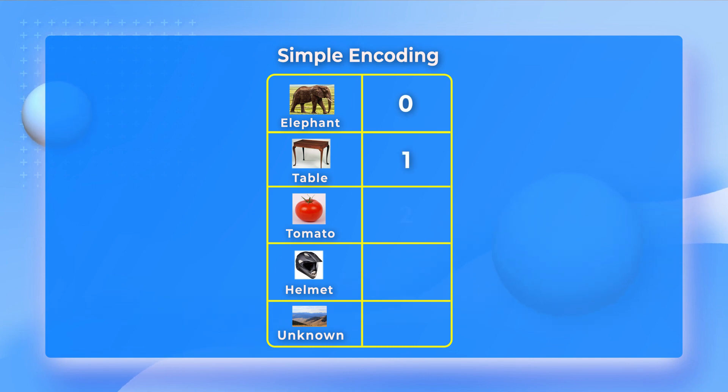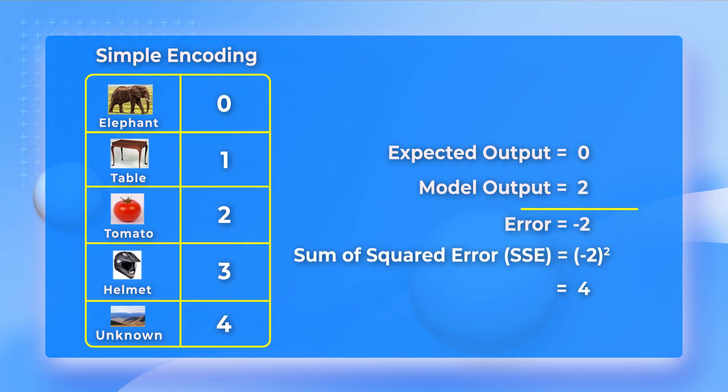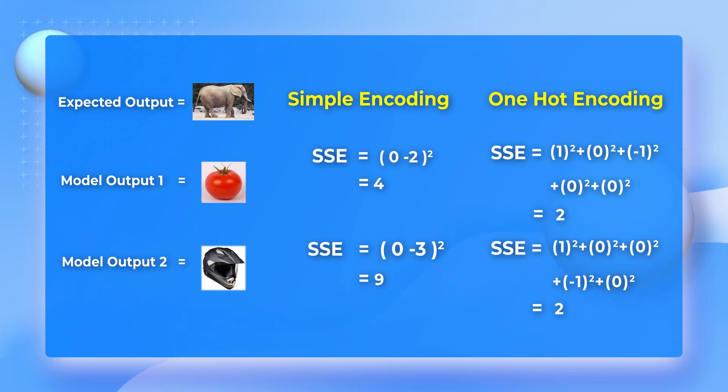Now let's see what happens if we use the naive encoding where 0 represents elephant, 1 represents table, 2 represents tomato, 3 represents helmet, and 4 represents unknown. When the elephant is misclassified as a tomato, the error is 4. In contrast, when it is misclassified as a helmet, the error is 9. This makes no sense. Because of the way the numbers are encoded, the machine learning algorithm thinks elephants are closer in appearance to tomatoes than to helmets. These errors are used to tune the knob settings, and if they do not make sense, we will get a poorly performing model. But when we use one-hot encoding, all classes are equidistant from each other — and that is why we use one-hot encoding for classification tasks.